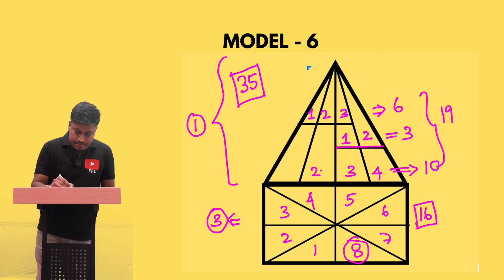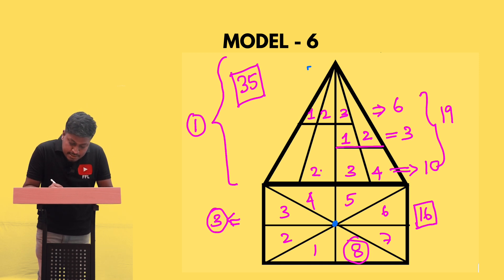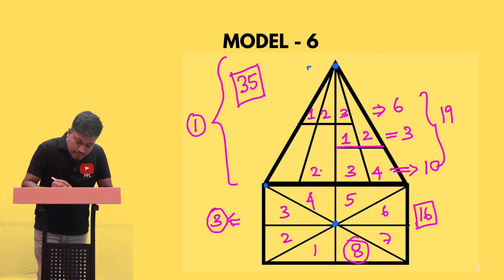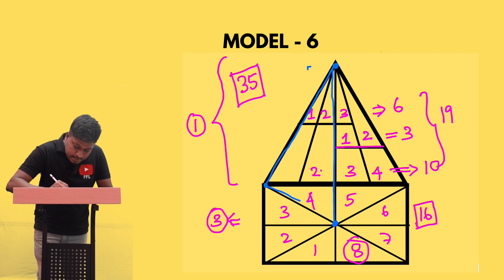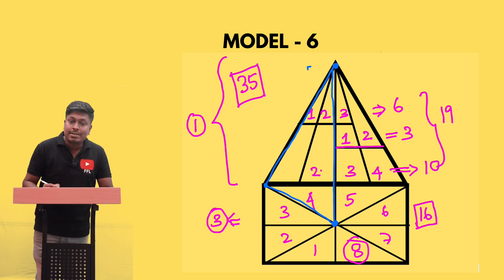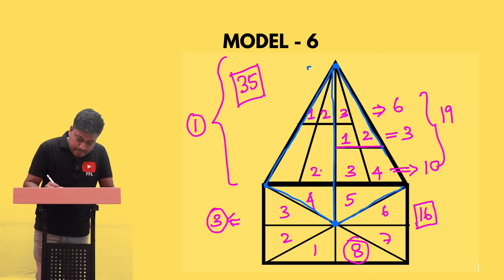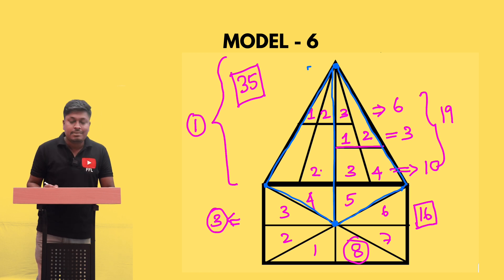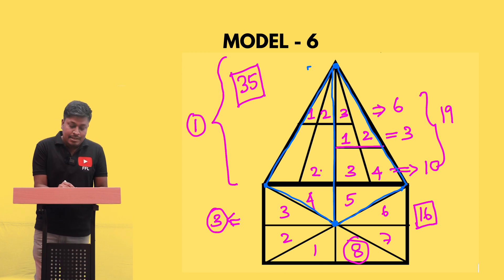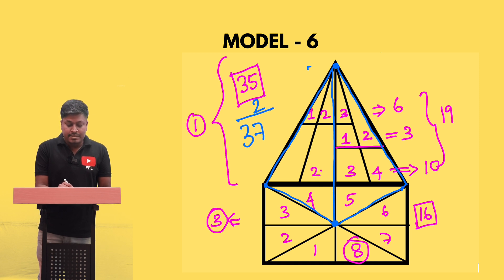Looking at the connecting area: keep this as one point, one point here, and one point — yes, this forms one triangle. Similarly, this forms another triangle. So there are two additional triangles in the connecting region. Therefore, 35 plus 2 equals 37.